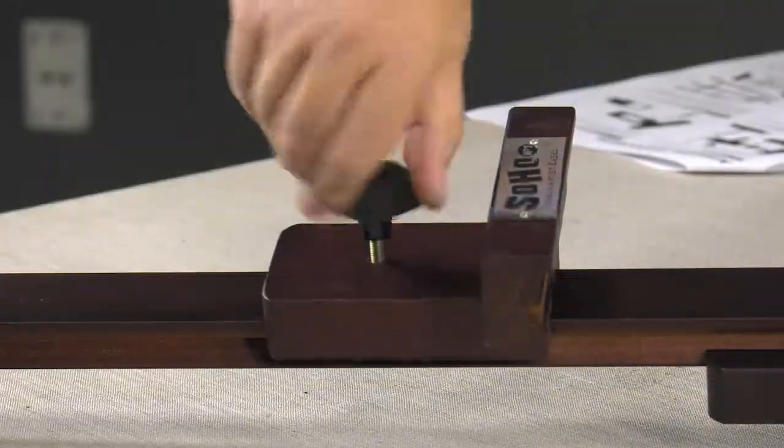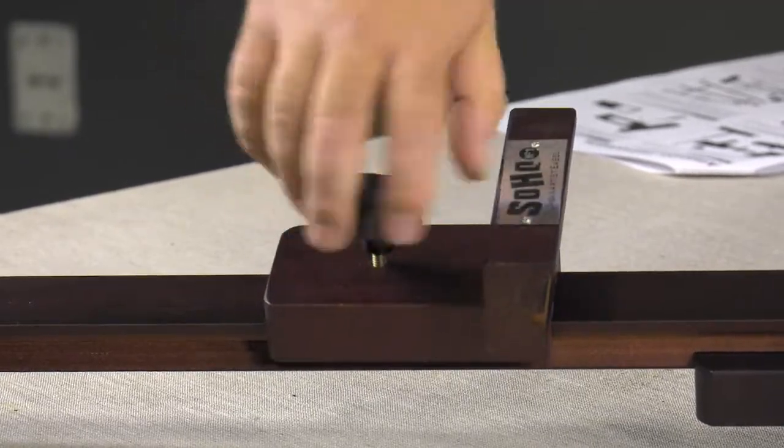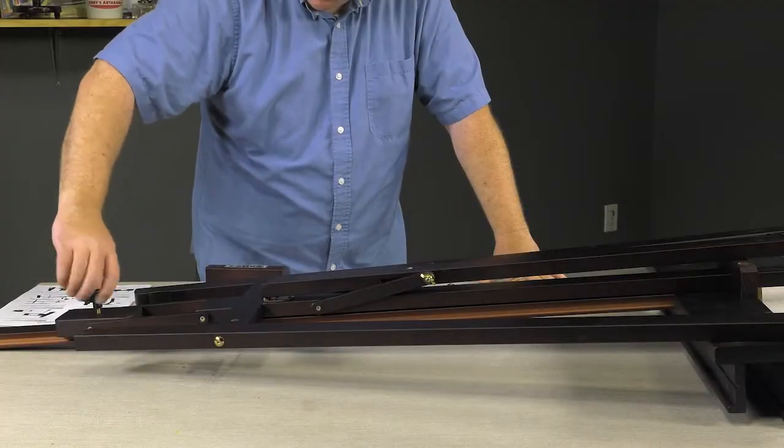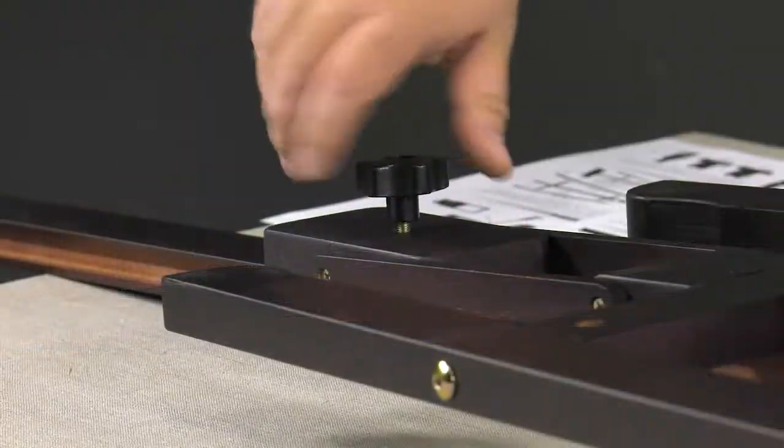Next, secure the black turn knob, M. Finally, secure the center mast support, K, with the black turn knob, M.